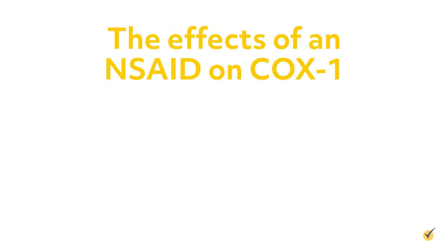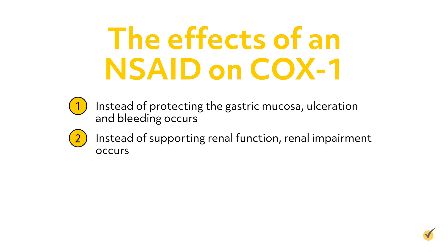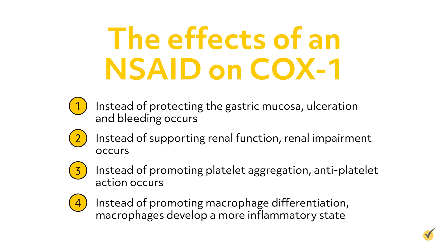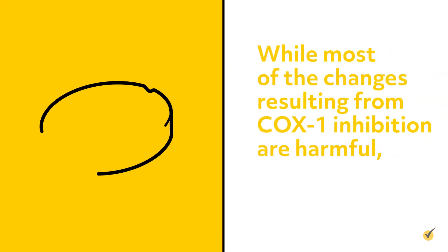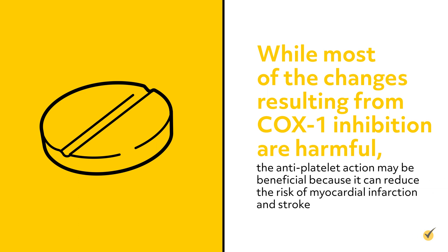So what happens when COX-1 and COX-2 are inhibited? Let's look first at the effects of an NSAID on COX-1. Instead of protecting the gastric mucosa, ulceration and bleeding occurs. Instead of supporting renal function, renal impairment occurs. Instead of promoting platelet aggregation, antiplatelet action occurs. And instead of promoting macrophage differentiation, macrophages develop a more inflammatory state. While most of the changes resulting from COX-1 inhibition are harmful, the antiplatelet action may be beneficial because it can reduce the risk of myocardial infarction and stroke.